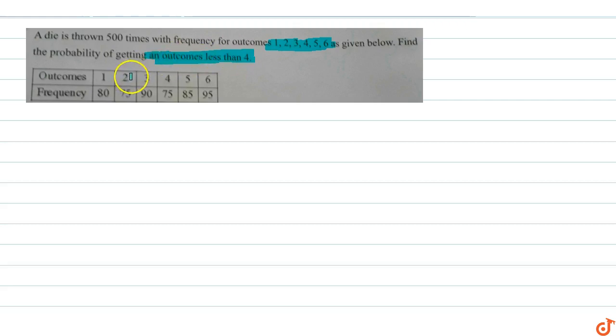We need to find the probability of getting an outcome less than 4. Looking at the frequencies: outcome 1 appears 80 times, outcome 2 appears 75 times, outcome 3 appears 90 times, outcome 4 appears 75 times, outcome 5 appears 85 times, and outcome 6 appears 95 times.